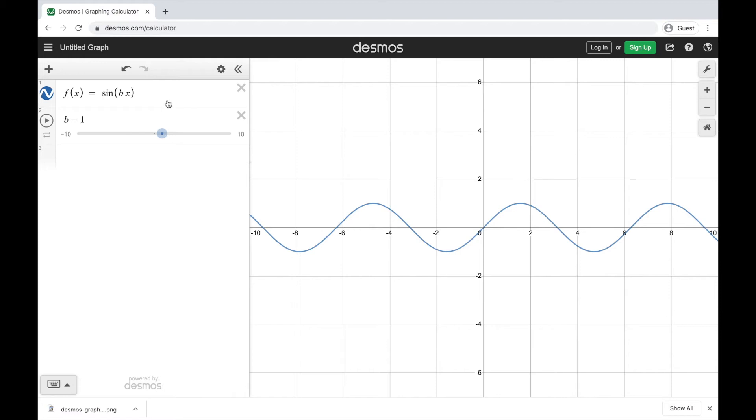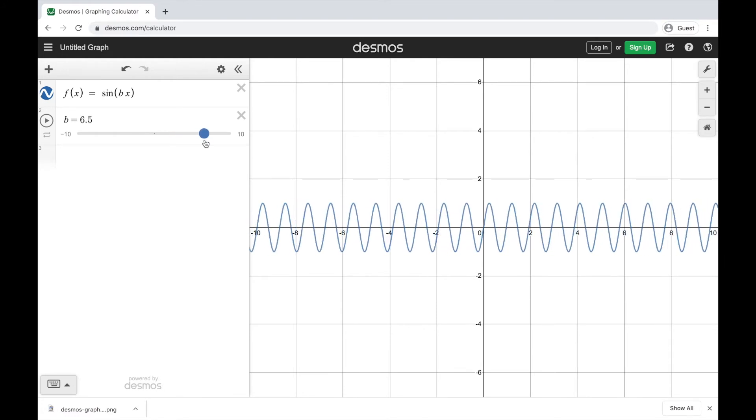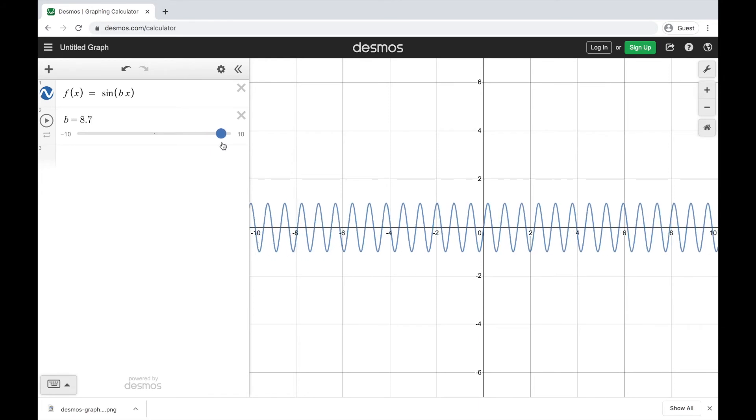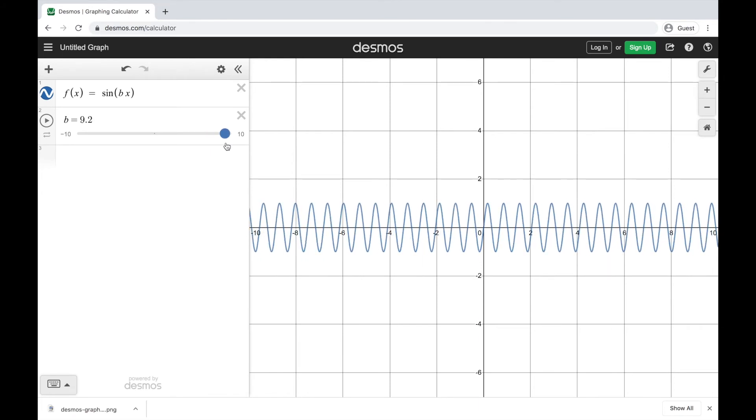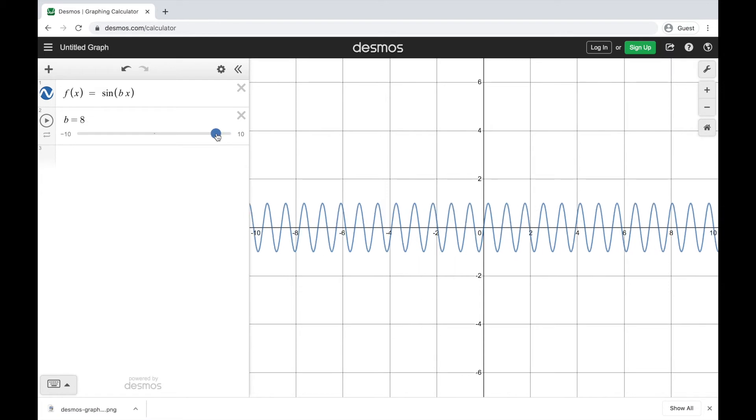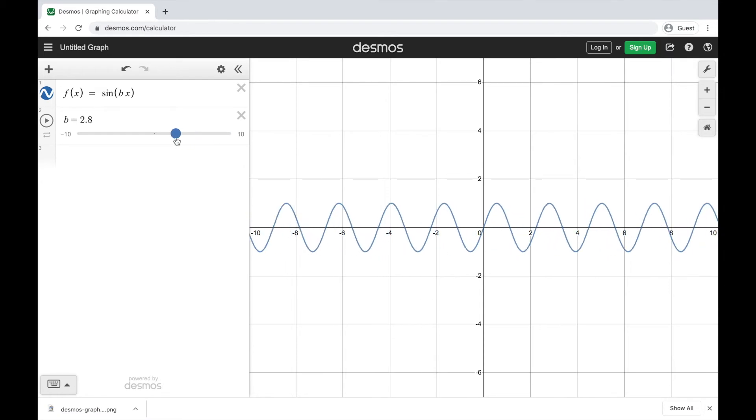Here I have my graph of sine of x. And if I make b larger, you can see it's going to repeat more and more often. We get it to repeat much more often and a lot faster. It kind of shrinks this curve in. On the other hand, if I get it closer to 0, you can see it really stretches out. It doesn't repeat as often. The curves really stretch out in the horizontal direction.